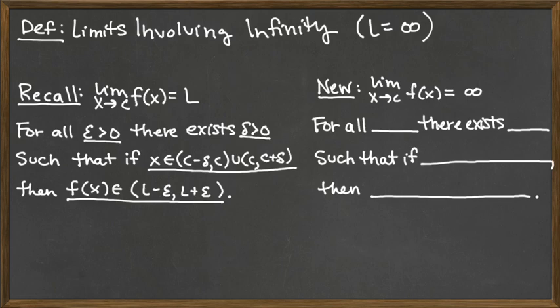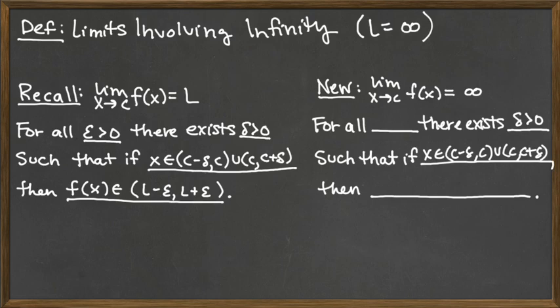The information we associate with x's — the x interval and the x distance — stays the same. The delta greater than zero doesn't change, and neither does the punctured interval for the x's: x is in (c minus delta, c) or (c, c plus delta). Those are going to be the same as they were for the original formal definition.